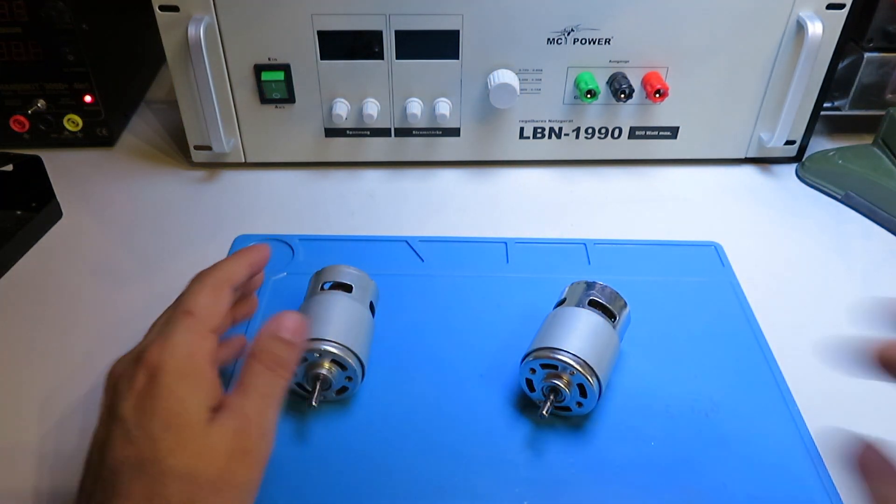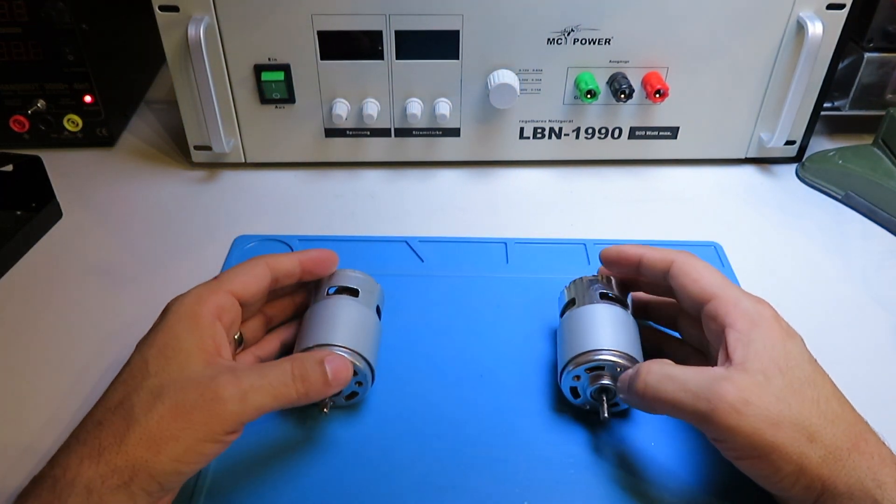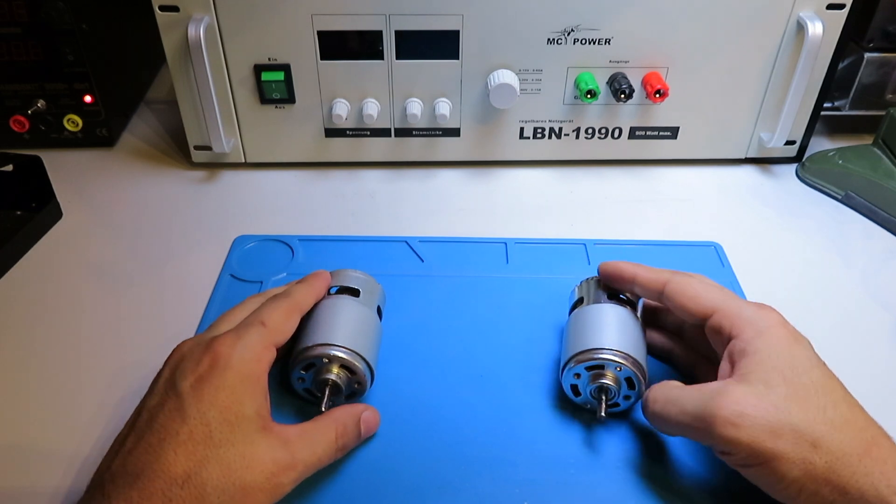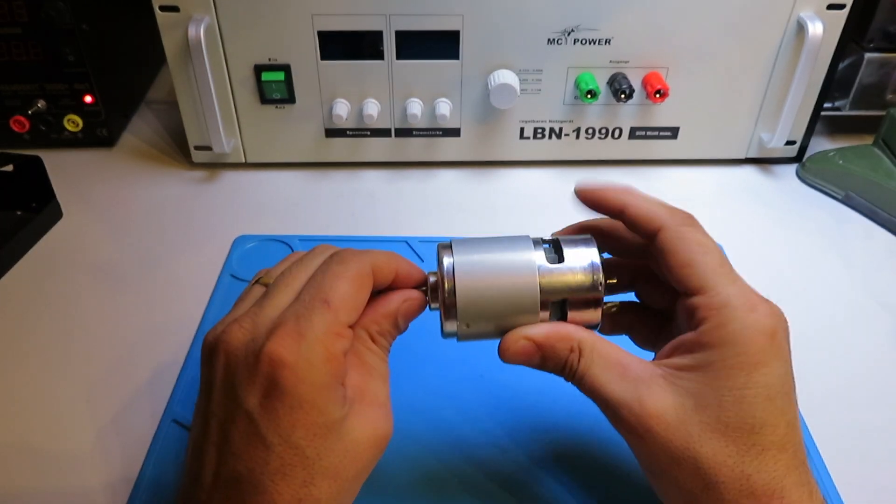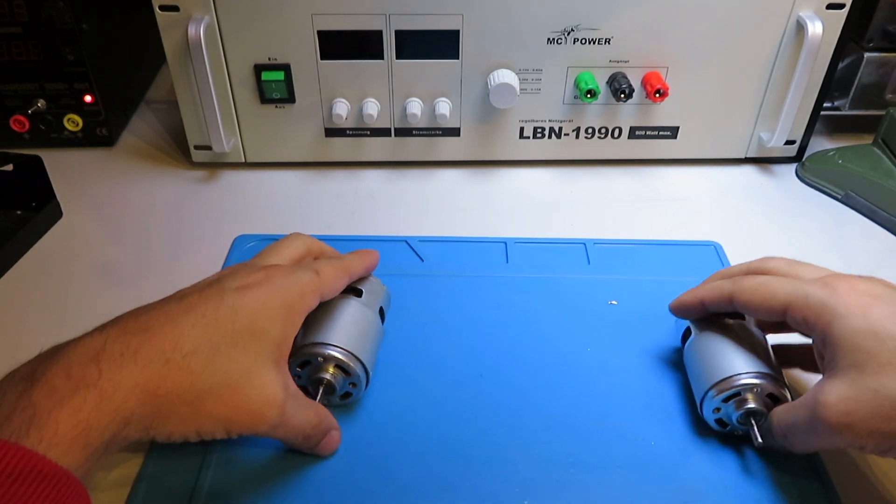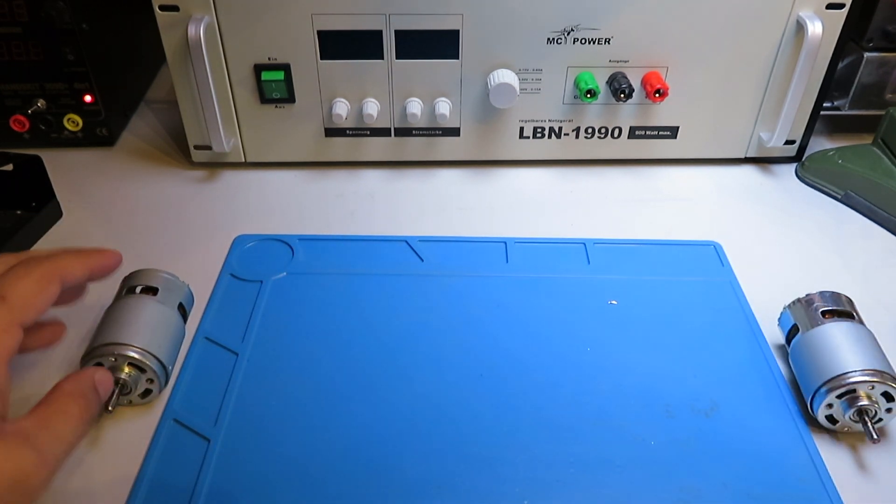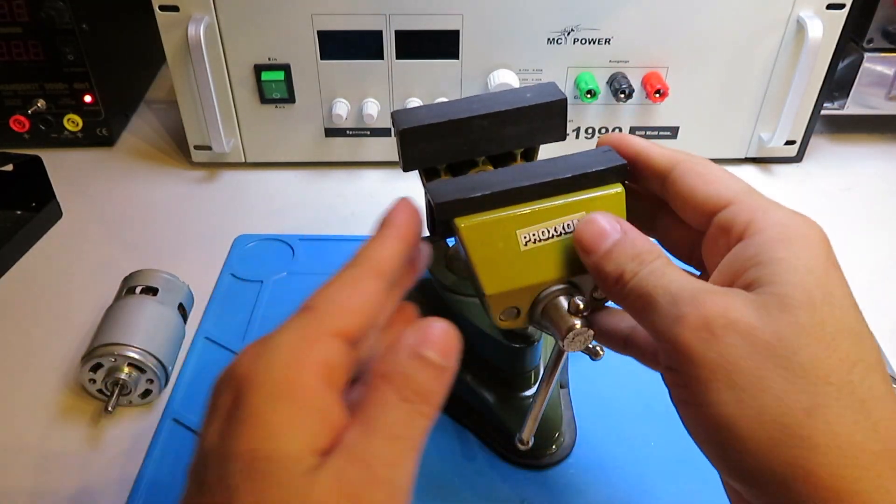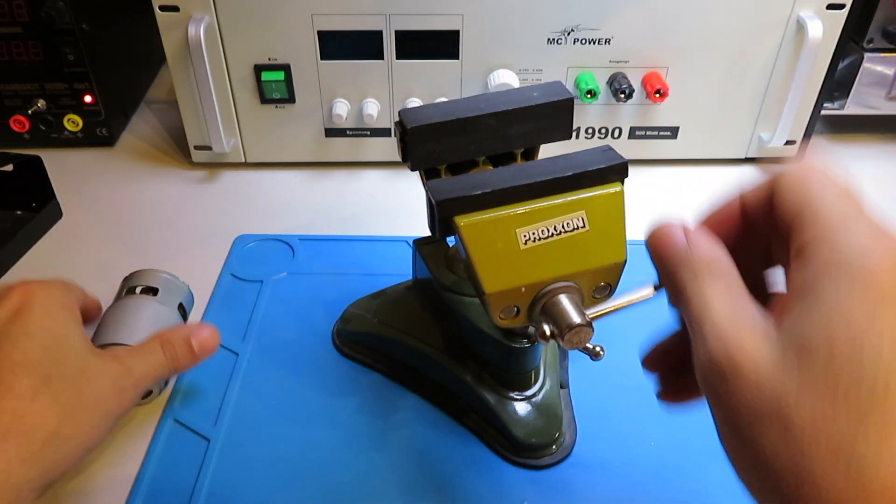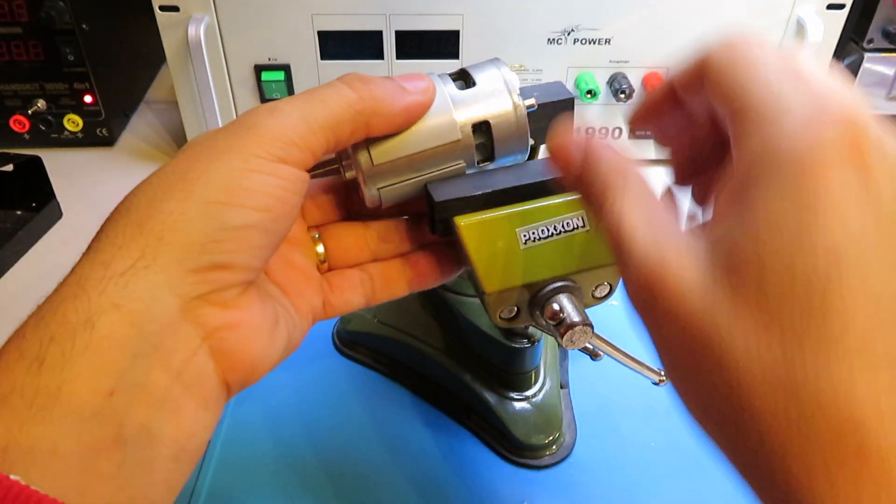So let me first show you that those motors draw different amounts of current at 12 volts, and then I'll measure the RPM at 12 volts and 24 volts for this specific one. So let me put this aside. Let me grab this holder so I can hold the motor in here. So let's start with this one.